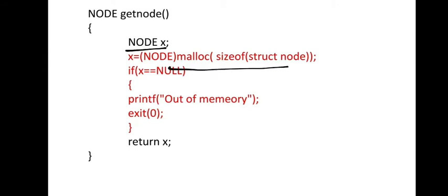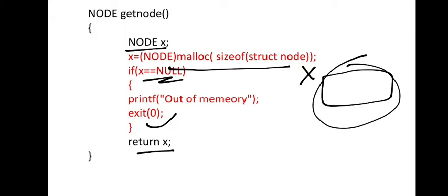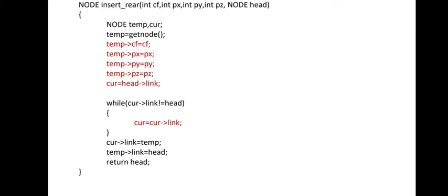Get node — you know this already. It creates a node, allocates some memory, stores it in x, and if it is null it will exit(0), otherwise it returns x with the allocated memory.